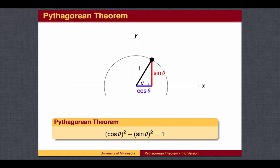Using these links, the Pythagorean Theorem is cosine of theta squared plus sine of theta squared equals 1 squared, which is 1. As a shorthand notation, we typically write the square on the cosine and sine functions and omit the parentheses.